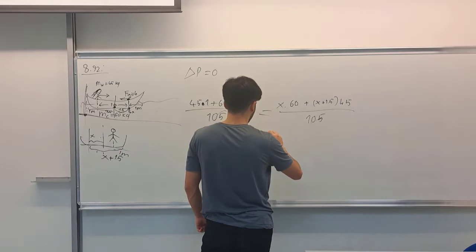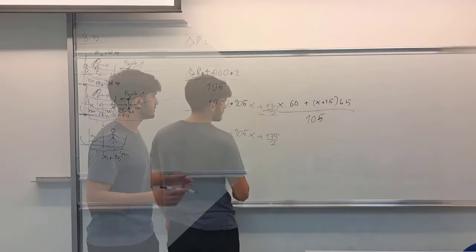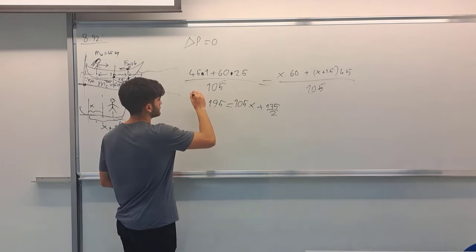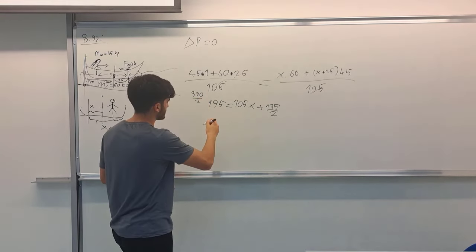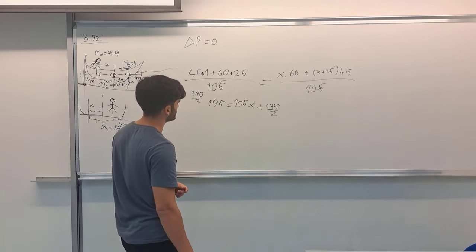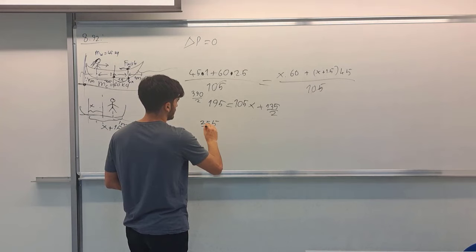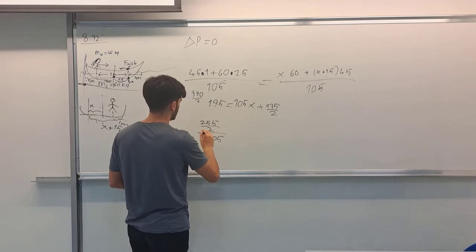And also I can say, you know, 135 over 2. So when I multiply this by 2, I obtain 390 over 2. So when I subtract it from this, I obtain 255 over 2, over 105 equals x.